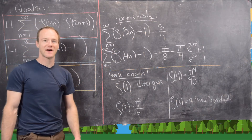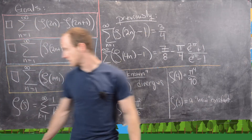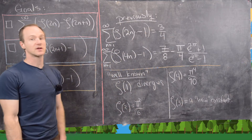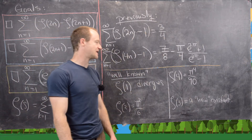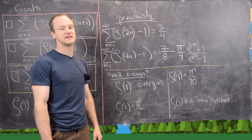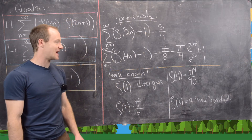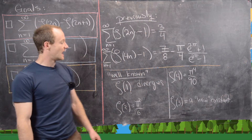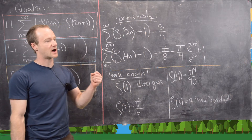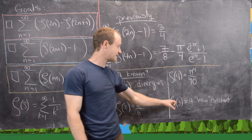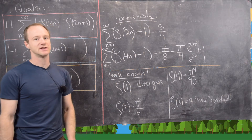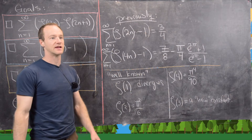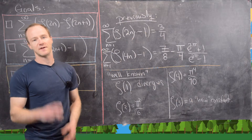Some other well-known facts: zeta of 1 diverges — that's the harmonic series. Zeta of 2 is pi squared over 6, Euler's famous sum. Zeta of 4 is pi to the 4th over 90. In fact all even values of zeta are rational numbers times powers of pi — specifically even powers of pi corresponding to the input. As for odd values, they are not odd powers of pi. There's a deep conjecture that the odd values of the zeta function are brand new constants, all algebraically independent of each other and of more common constants.